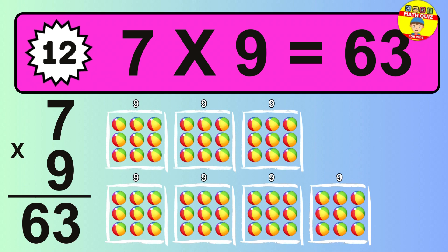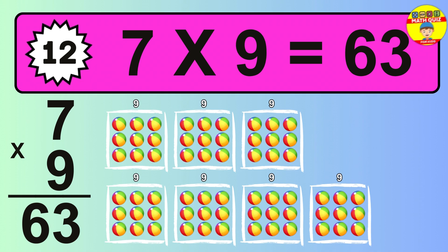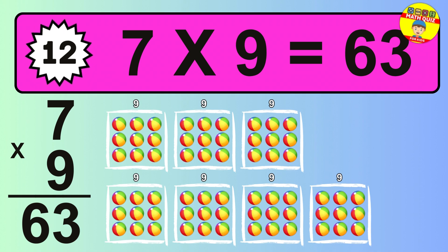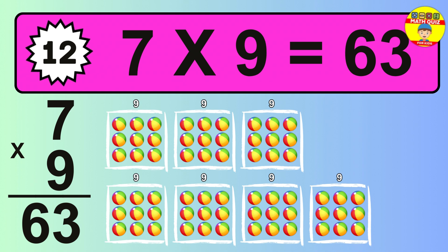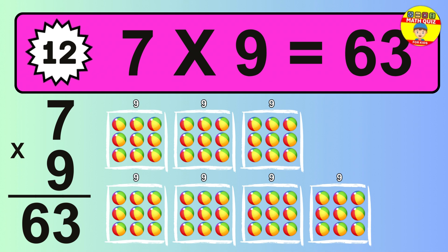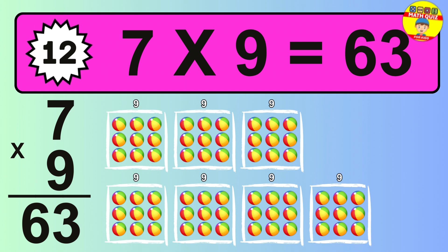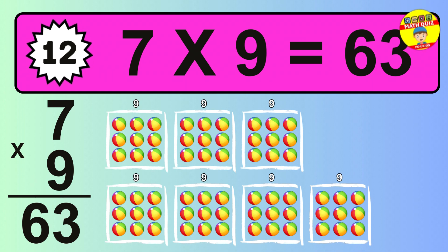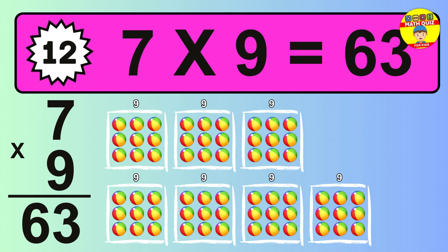The answer is 7 times 9 is 63. To calculate, we have 7 groups with 9 balls each one. So, how many balls do we have?